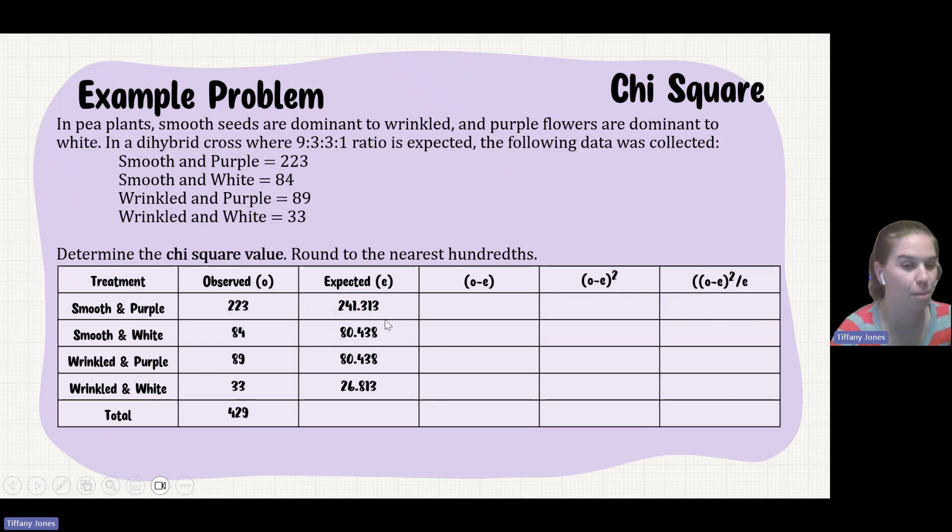You're probably wondering why I have so many decimal places in my chart. I go one decimal place past wherever I have to round to. So since I have to round to the hundredths place, I want to have each of these rounded to the thousandths place to decrease my amount of rounding error that I'll have.